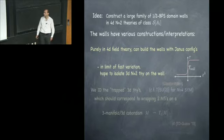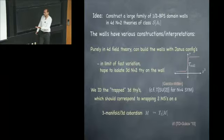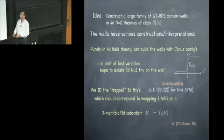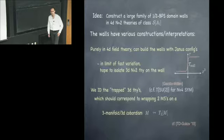We identify these trapped theories for a huge class of walls. They are the N=2 variants or equivalents of the T[SU(2)] or T[SU(N)] theories that Gaiotto and Witten described as living on domain walls in 4-dimensional N=4 super Yang-Mills.